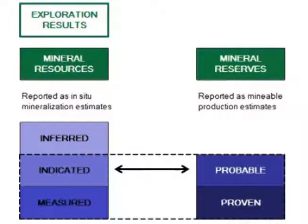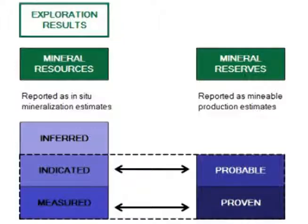Indicated resources are converted to probable reserves. Probable reserves have a lower level of confidence than proven reserves. Probable reserves have a reasonable level of confidence in continuity of mineral and consistency of grade. In most cases, measured mineral resources are converted to proven reserves. Proven reserves have a high level of confidence in continuity of mineral and consistency of grade. Proven reserves also have a high level of confidence in the modifying factors.